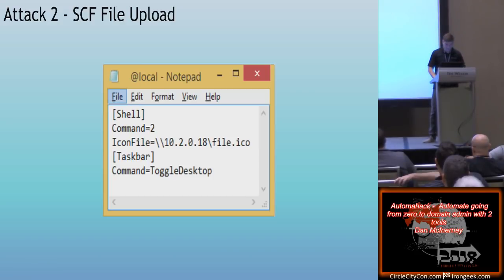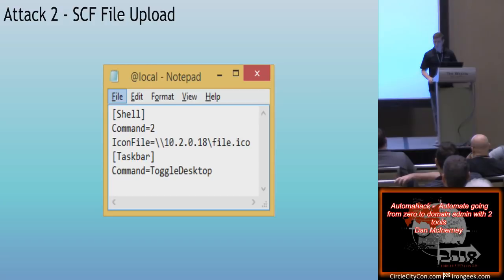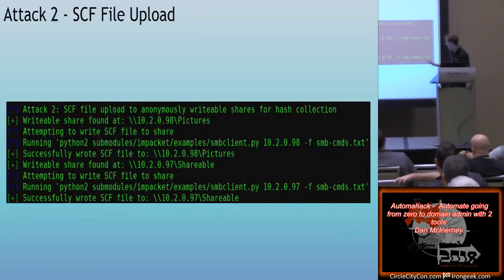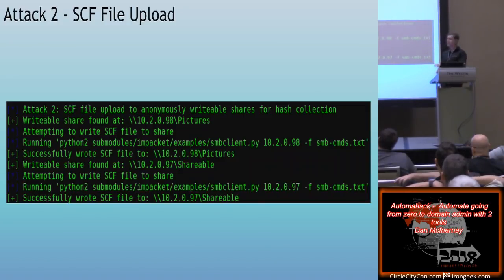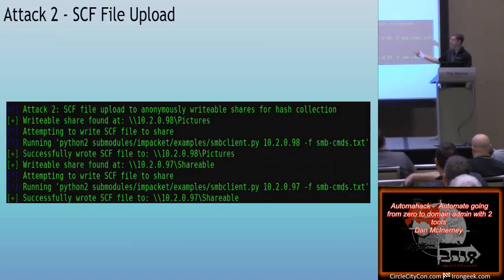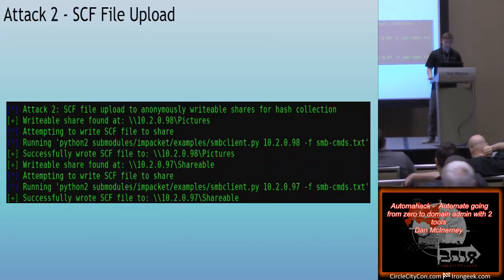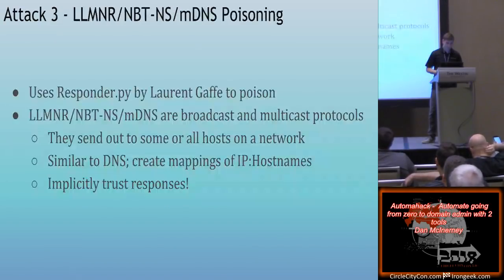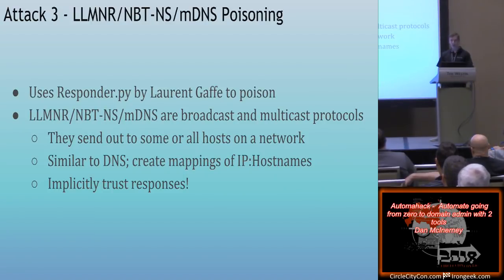Here's what the SCF file looks like — it's super simple. `Shell, Command2` — the important part is `IconFile=` pointing to my attacking machine. The file doesn't even have to exist. You upload that to the anonymous writable shares, and whenever someone connects, you get the password. You do need to be running Responder to capture their hash, but this tool already does that. In practice, it finds the writable shares, attempts to write, runs SMB client to write the file, and then verifies the file is actually there to avoid false positives. There's also an option to delete these files after you hit Control-C.